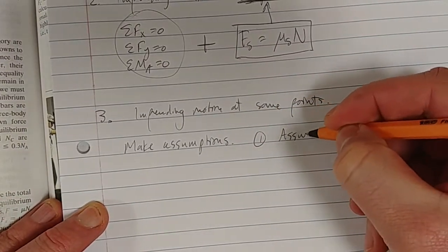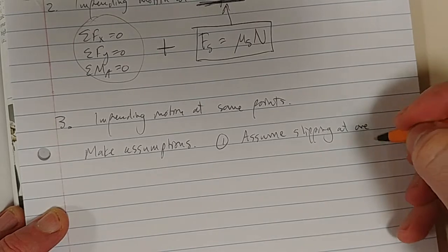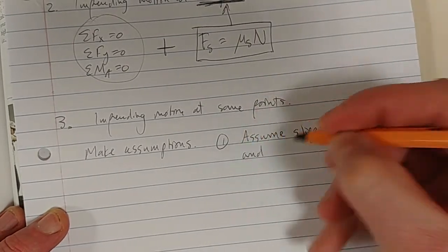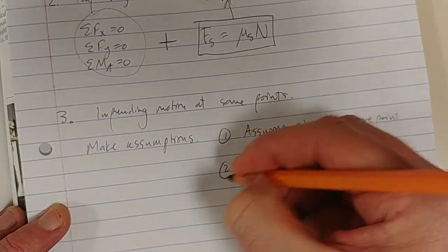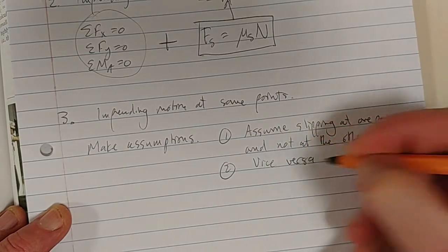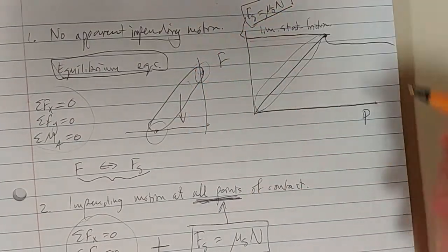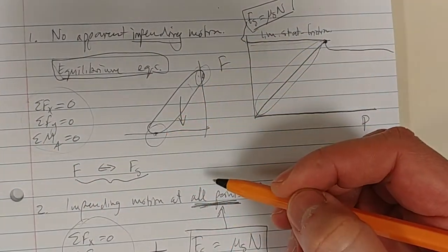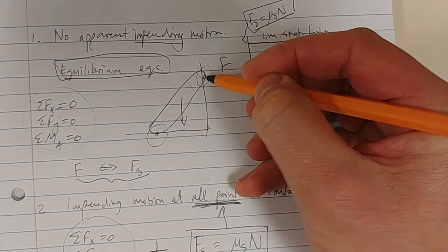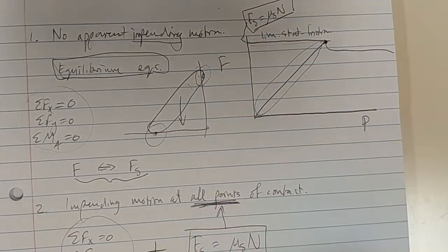So we assume slipping at one point and not at the other, then vice versa. For example, if we are trying to find what force or weight is needed to make the structure slip, but we don't know where it will slip first, we assume it'll slip at one point and solve, then assume it'll slip at the other point and solve. I'll do an example to illustrate these things.